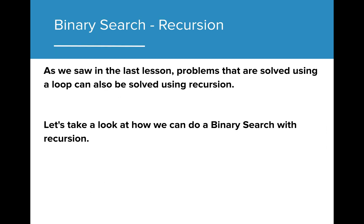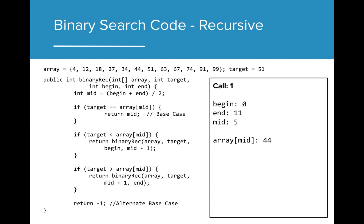As we saw in the last lesson, problems that are solved using a loop can also be solved using recursion. Let's take a look at how we can do a binary search with recursion. Remember, recursive code calls a simpler problem each time through. In this case, each recursive call is essentially calling a smaller array until we get so small that we find our solution.